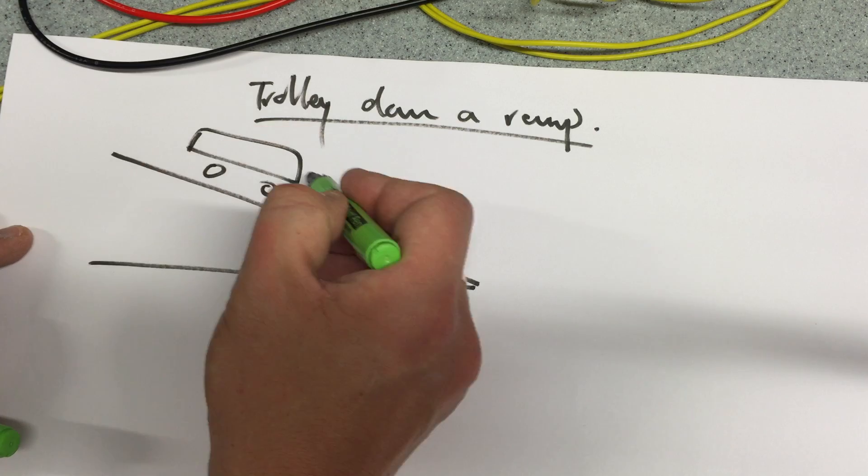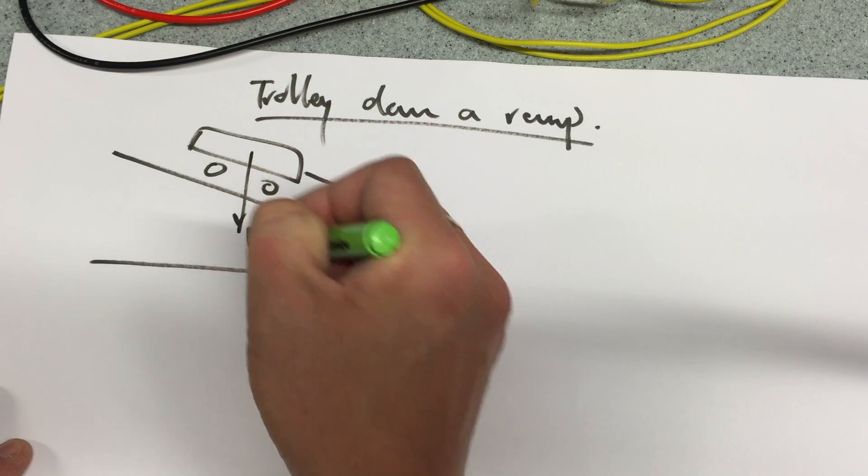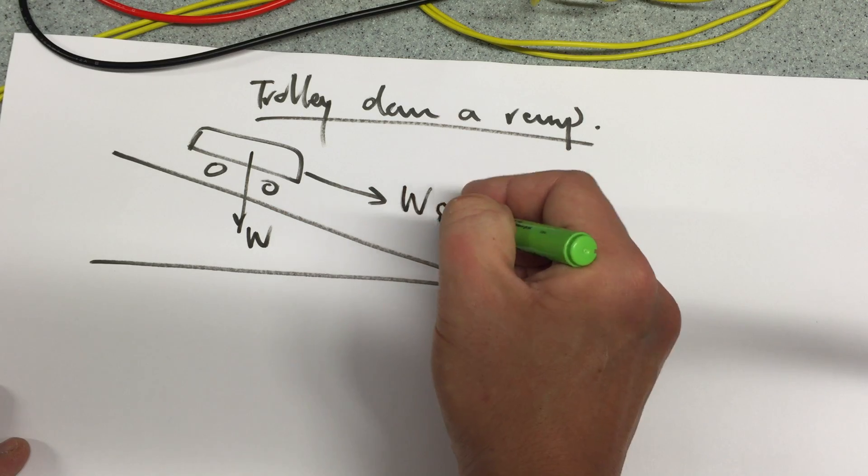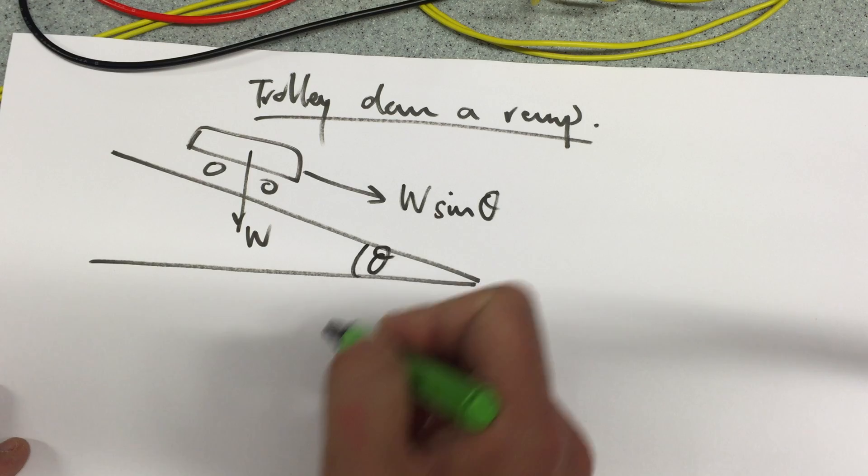There is my trolley and it's coming down the ramp. It's being drawn down the ramp because there is a weight but there is a component of that weight in that direction where this is theta.